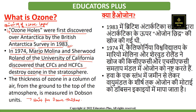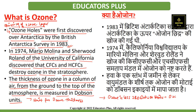The unit of ozone thickness measurement is Dobson units. The thickness of ozone in a column of air from the ground to the top of the atmosphere is measured in Dobson units. When the ozone thickness becomes less than 220 Dobson units, the ozone layer is considered thin or to have holes in it.